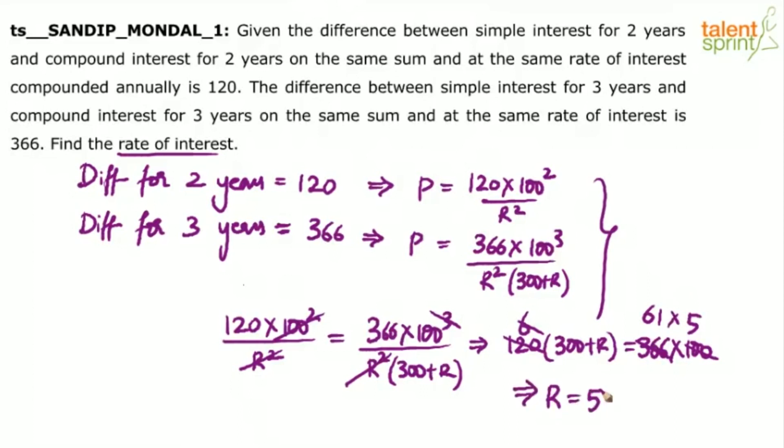rate of interest R is equal to 5 percentage. 5 percentage per annum. What is complex about it?